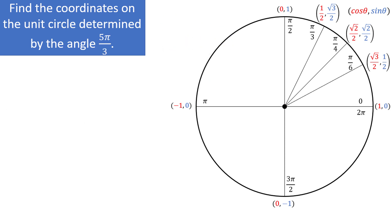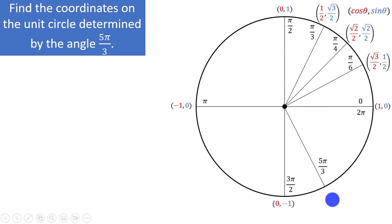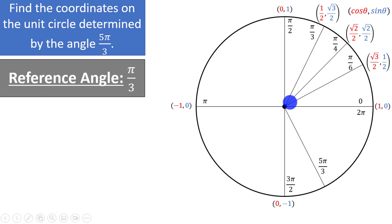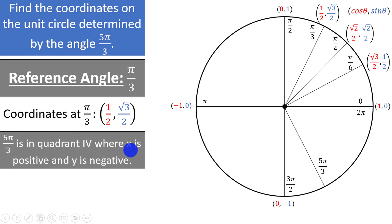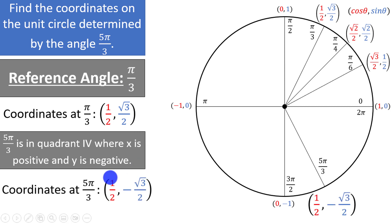Let's find the coordinates on the unit circle determined by 5 pi over 3. Going around: pi over 3, 2 pi over 3, 3 pi over 3 is pi, 4 pi over 3 is below, and 5 pi over 3 is in the fourth quadrant. The reference angle is pi over 3 because we are pi over 3 radians below the positive x-axis. The coordinates at pi over 3 are (1/2, √3/2). Since we are in the fourth quadrant, x is positive and y is negative. So we only change the y-coordinate, giving us (1/2, −√3/2) at 5 pi over 3.